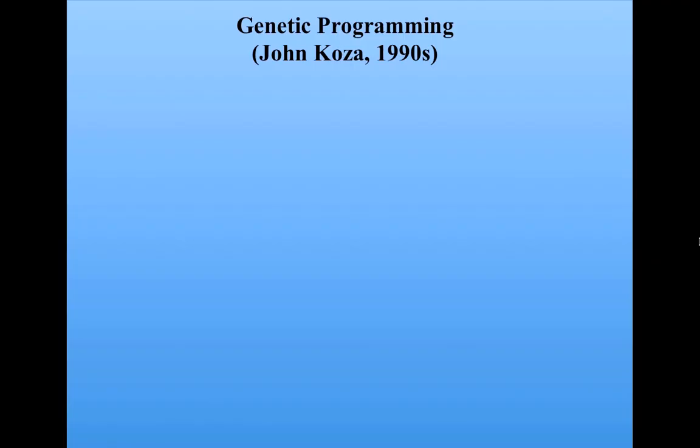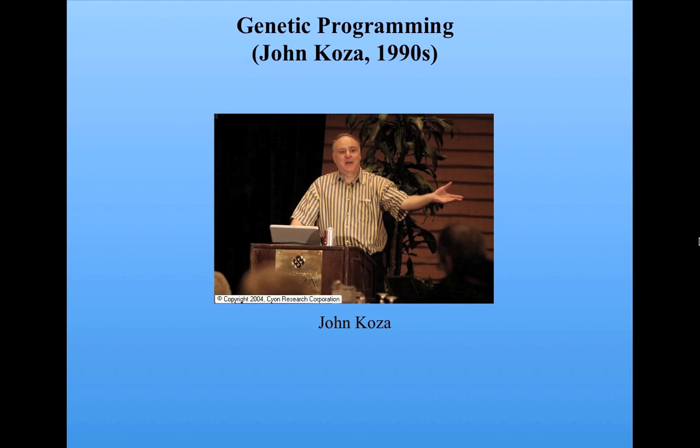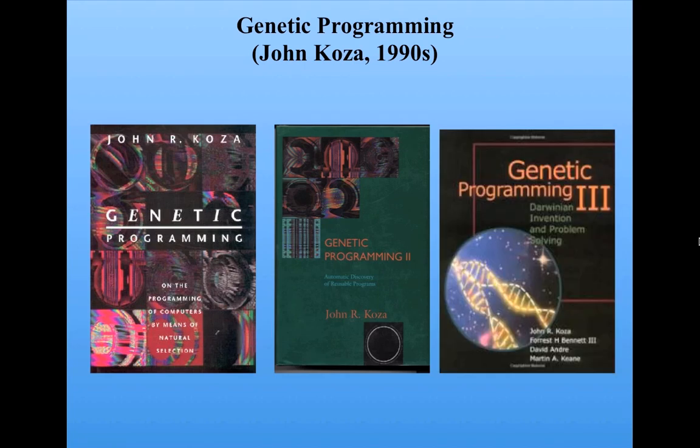Let's talk about a slightly different approach to genetic algorithms called genetic programming, which was developed by John Koza in the 1990s. Genetic programming, instead of using strings of numbers as we did for Robbie the robot, uses programs represented as what are called syntactic trees. Koza has written three books on this subject, and it's become a very big sub-area of the field of genetic algorithms.